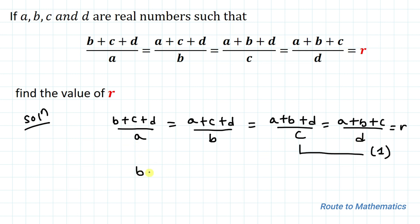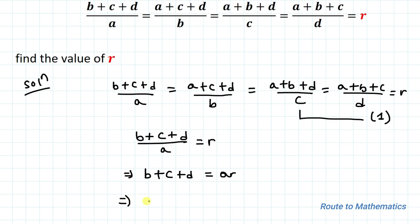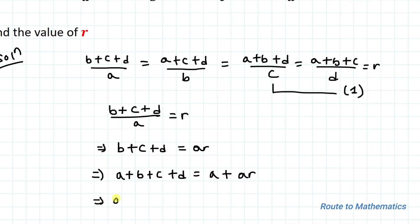Our first ratio is (b+c+d)/a = r. By cross multiplication we can write b+c+d = ar. Now adding a to both sides of the equation, we have a+b+c+d = a + ar. Taking a common, this implies a+b+c+d = a(1+r). Let's take this as equation 2.